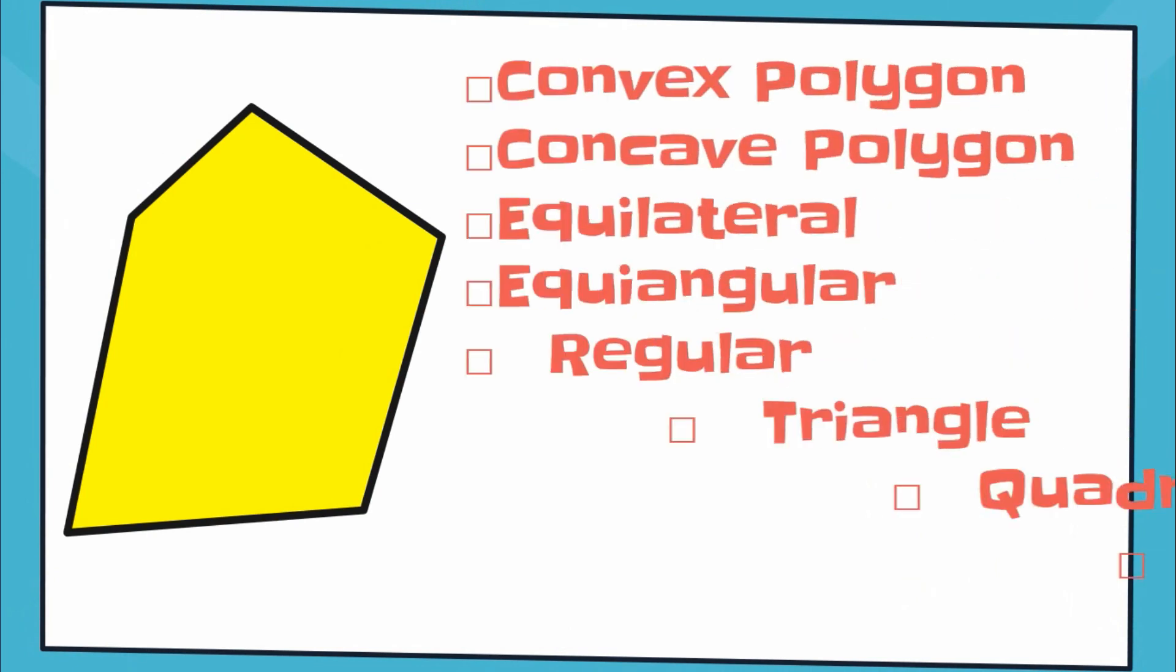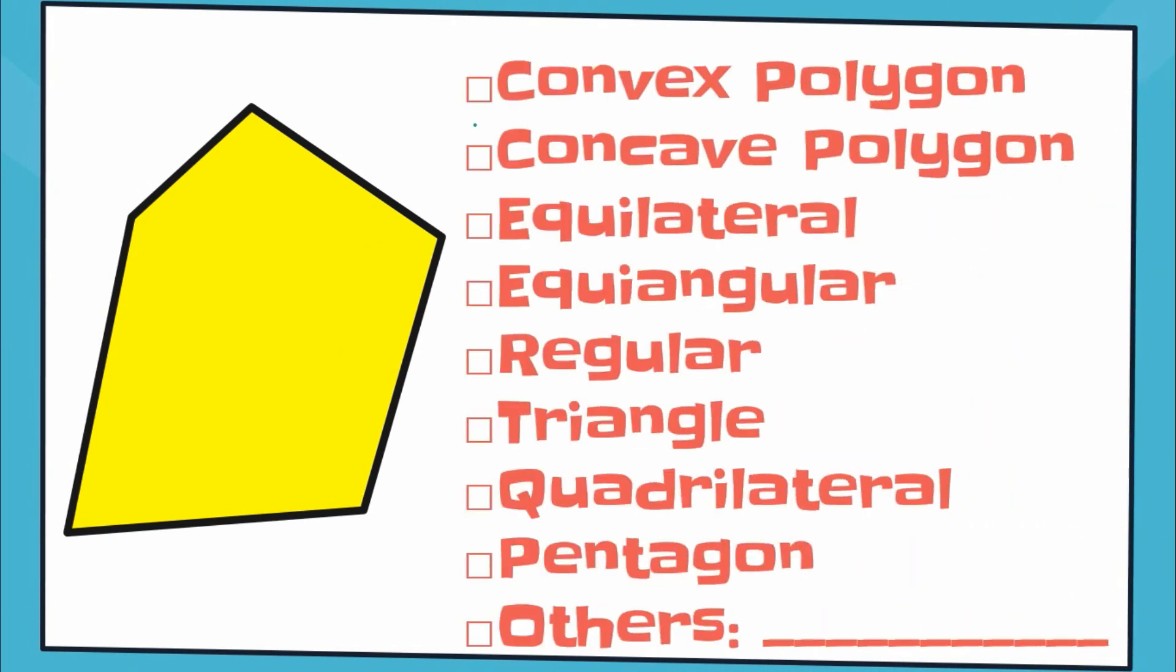Now let's try to take a look at this. This one, is this convex or concave? It's a convex. Equilateral? No. Equiangular? No. Regular? No. Triangle? No. Count how many sides you have: one, two, three, four, five. It has five sides, so that's a pentagon.